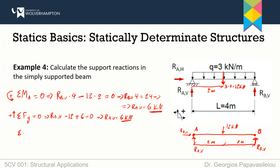Last, the sum of forces in the x-direction equals zero. Forces pointing to the right are positive. RAH with no other horizontal forces present equals zero. Note: for a zero result, you don't need to write units — though writing zero kilonewtons is also acceptable.